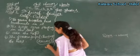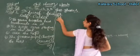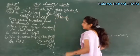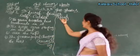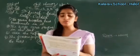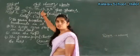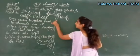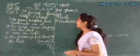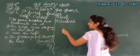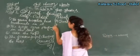Aur loaves ka singular likhna hai neeche space mein — loaf: L-O-A-F, jab F hota hai toh VES lagate hain. Sandwiches mein CH aaya last mein, toh ES use kiya: sandwiches. Uska singular — sandwich: S-A-N-D-W-I-C-H. Like this.